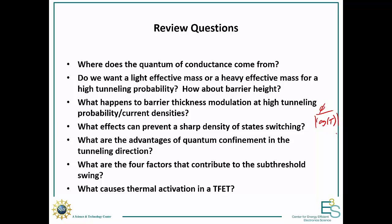What effects can prevent a sharp density of states switching? It's really any sort of inhomogeneity: doping atoms, interface traps, various defects, thickness fluctuations in quantum wells, and lateral inhomogeneity in the device. There are many different things that can ruin a sharp density of states switching, so we really need to focus on getting very good quality, very uniform material if we actually want to see sharp turn-ons.